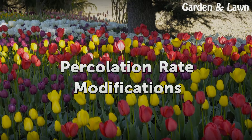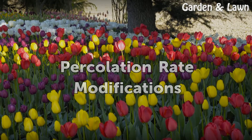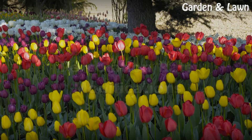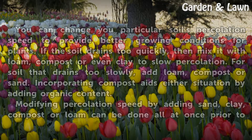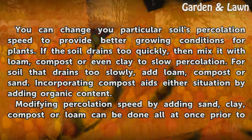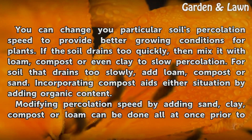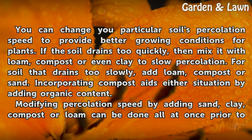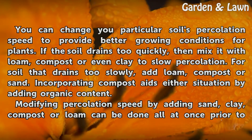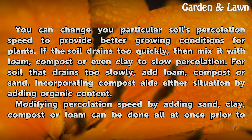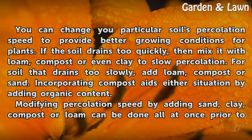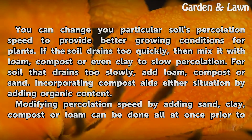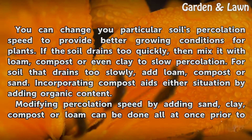Percolation Rate Modifications. You can change your particular soil's percolation speed to provide better growing conditions for plants. If the soil drains too quickly, then mix it with loam, compost, or even clay to slow percolation. For soil that drains too slowly, add loam, compost, or sand. Incorporating compost aids either situation by adding organic content.